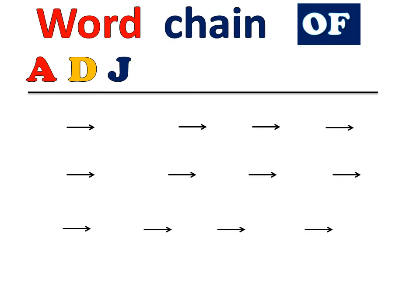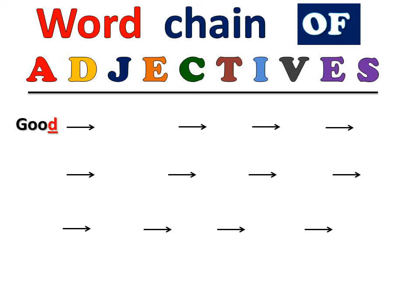Now let's study word chain of adjectives. I will take one adjective here. In this we will prepare word chain of adjectives, that means, antakshari of adjectives. From the last letter of each adjective, we form the next adjective. Good is an adjective. Good means good.